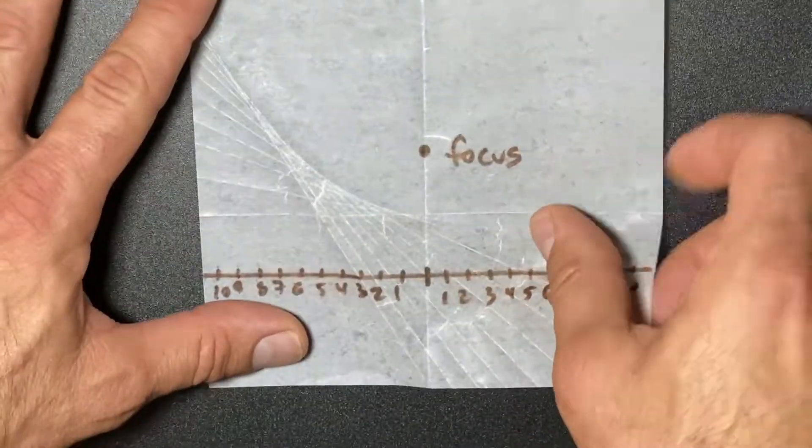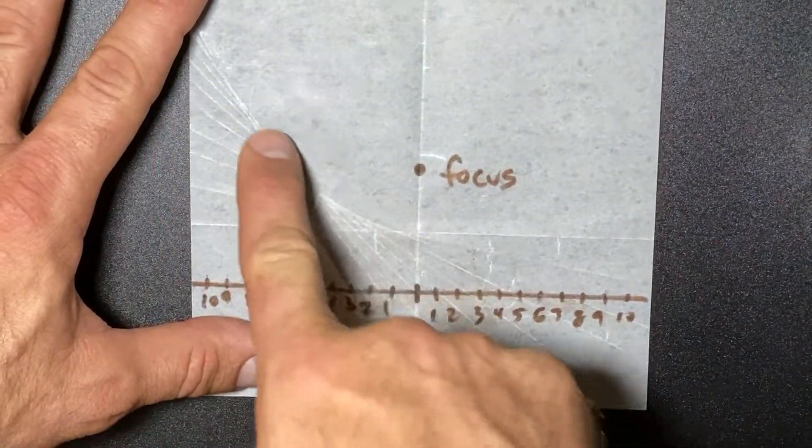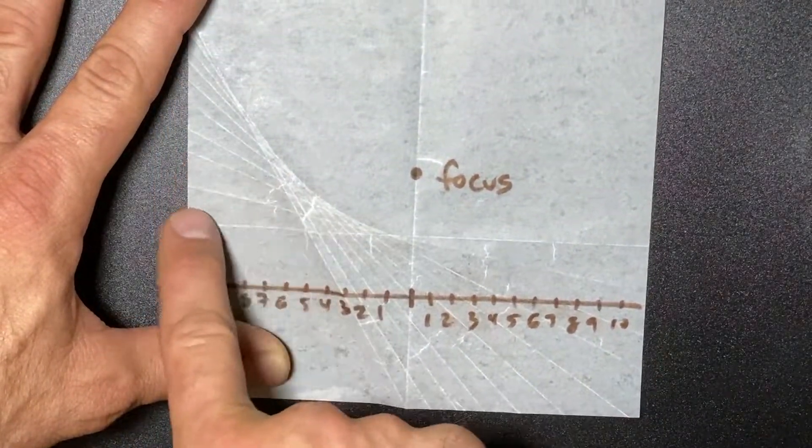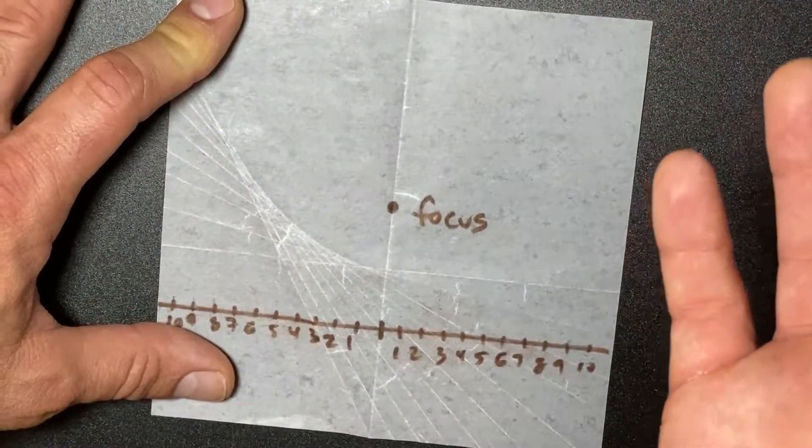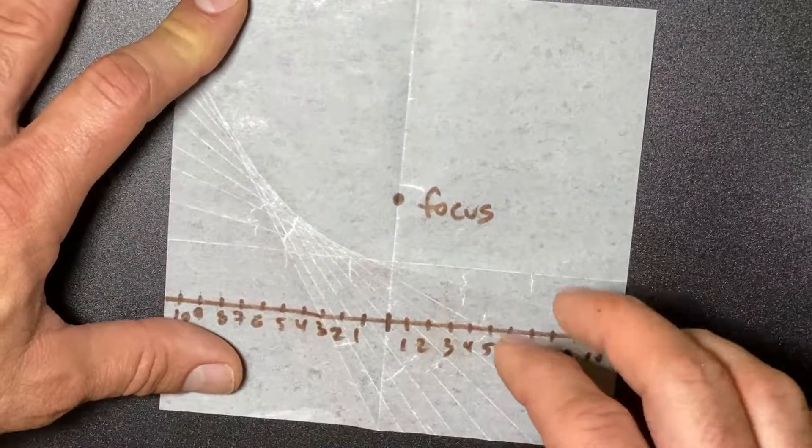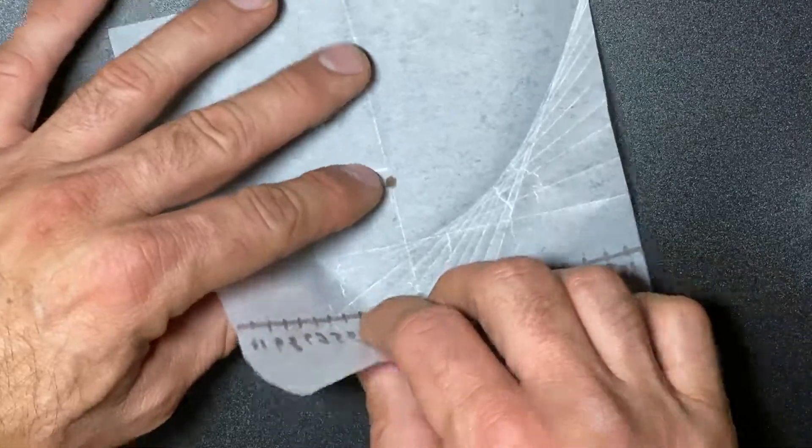When I turn the paper around, I actually have the parabola. You could start to see it, and you could see the folds which are actual tangent lines or the rate of change at that point if you wanted to talk about the derivative in calculus. Now that I've done one side, I'm going to flip it over and fold the other side.